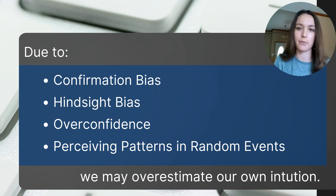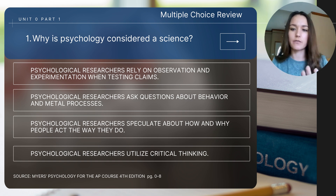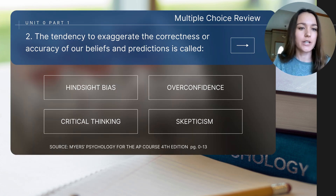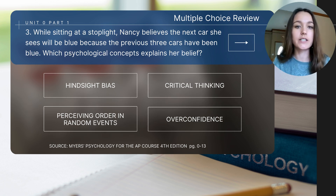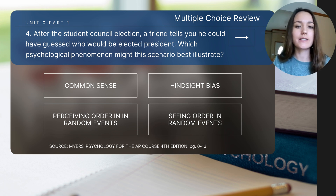As I close out this video, here are four review questions. I'll read the questions but not the answers — pause the video and determine which answer you think is correct. Question one: why is psychology considered a science? Question two: the tendency to exaggerate the correctness or accuracy of our beliefs and predictions is called what? Question three: while sitting at a stoplight, Nancy believes the next car she sees will be blue because the previous three cars were blue — which psychological concept explains her belief? Question four: after a student council election, a friend says he could have guessed who would be elected president — which psychological phenomenon might this best illustrate?